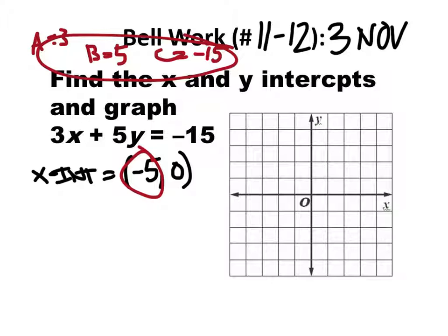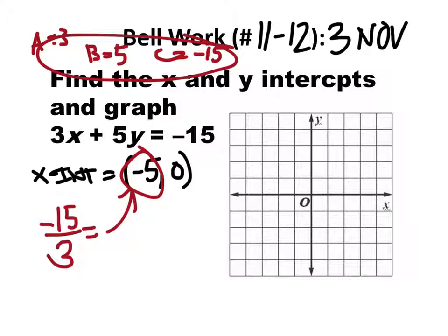Some of you did show that c is negative 15 over 3, which is negative 5. Great — scored it. You nailed it. If you did not show work, then I did not give credit and I just marked it wrong. There's no need for me to work any harder than that.